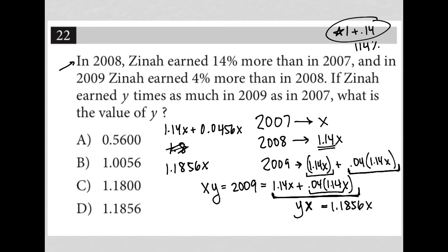And like I said earlier, that means that this coefficient here is the Y value, right? Because we already have the X value taken care of. So our answer to this question is choice D, 1.1856.